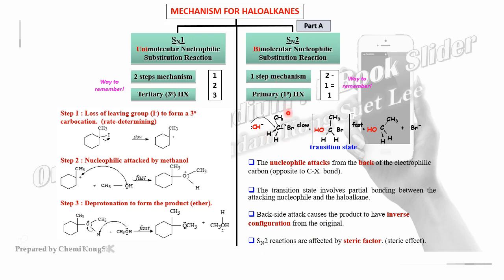SN2 reactions are affected by steric effect. The bromide ion is a side product. The key points to remember: there is one slow step (backside attack forming the transition state), then a fast step forming the product. Must label the negative, positive, positive charges on the transition state. Bond forming occurs at the nucleophile side; bond breaking occurs at the C-X side.